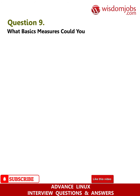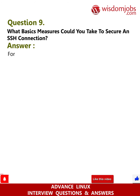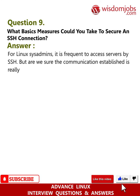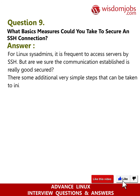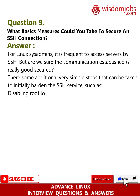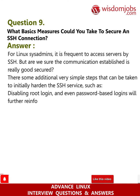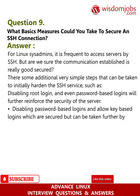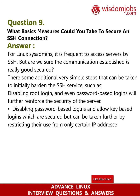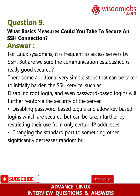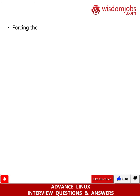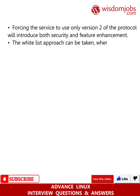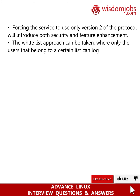Question 9: What basic measures could you take to secure an SSH connection? For Linux sysadmins, it is frequent to access servers by SSH. There are some additional simple steps that can be taken to initially harden the SSH service: disabling root login, and disabling password-based logins to allow key-based logins, which are more secure and can be further restricted to only certain IP addresses. Changing the standard port to something else significantly decreases random brute force attempts from the internet. Forcing the service to use only version 2 of the protocol introduces both security and feature enhancements. The whitelist approach can be taken, where only users belonging to a certain list can log in via SSH.